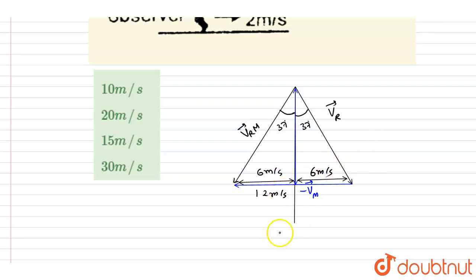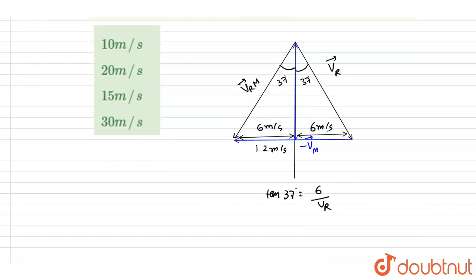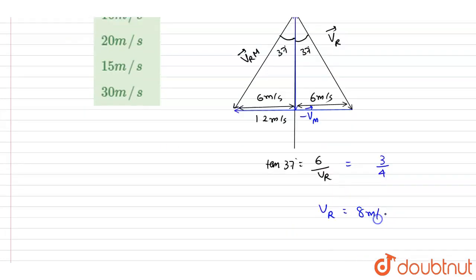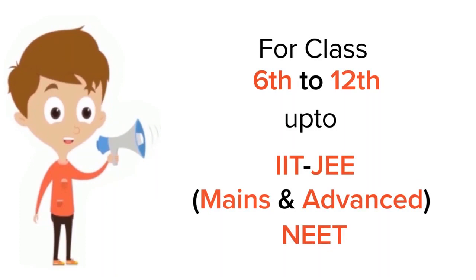So if you see here, I will write down tan 37 equals 6 by vr. That's it. This is the only equation we will use here. And tan 37 is 3 by 4, so vr, if you see this, you will multiply here, so it will be 8 meters per second. And this is the answer of this question. Thank you.